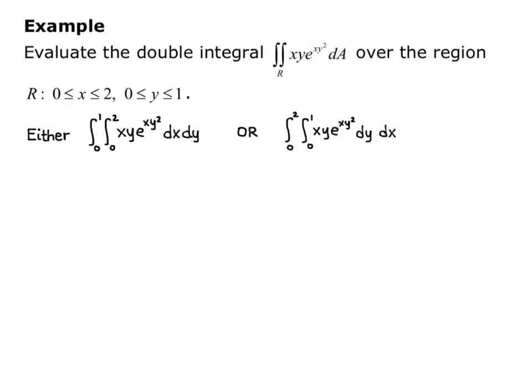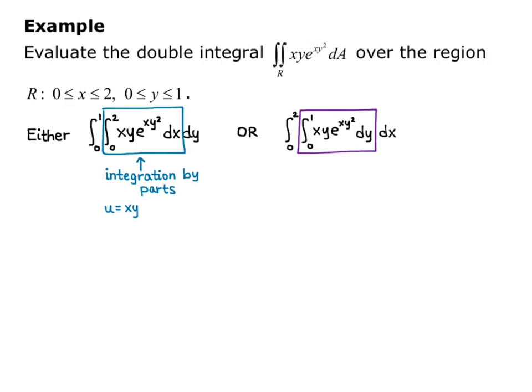Let's think about the methods for integrating these. For the first form, the inner integral is from 0 to 2 of xy·e^(xy²) dx, where y is a constant and x is the variable. The term xy is not the derivative of xy², so we cannot use u-substitution — we would actually have to use integration by parts. We'd set u = xy and dv = e^(xy²) dx.